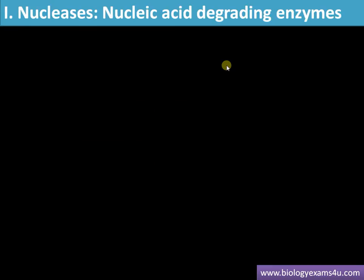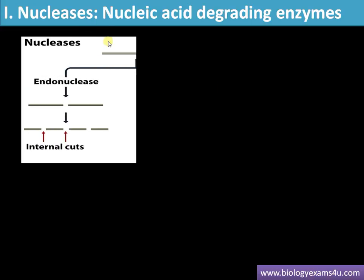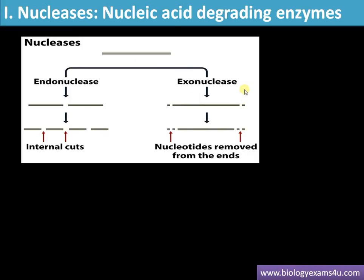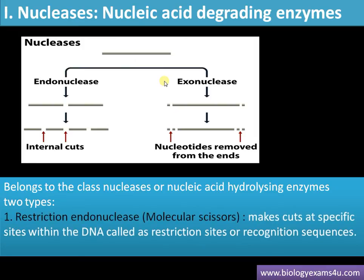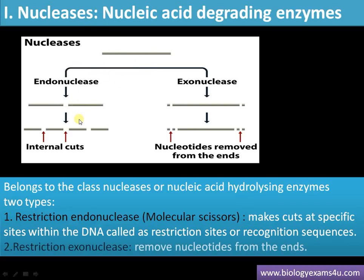Starting with nucleases: nucleases are nucleic acid degrading enzymes. There are two types — endonucleases, which cause internal cuts in a DNA molecule, and exonucleases, which cause cuts at the terminal regions, removing nucleotides from the ends. Restriction enzymes are among the most commonly used nucleases in recombinant DNA technology. Their discovery marked the birth of modern biotechnology. Restriction endonucleases are also called molecular scissors, making cuts at specific sites within a DNA molecule, whereas exonucleases remove nucleotides from the ends.